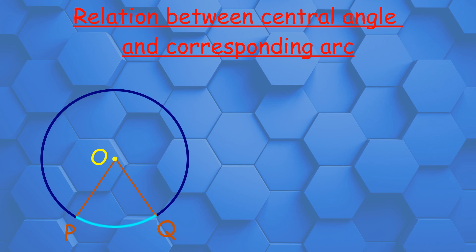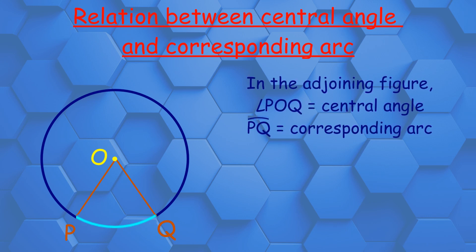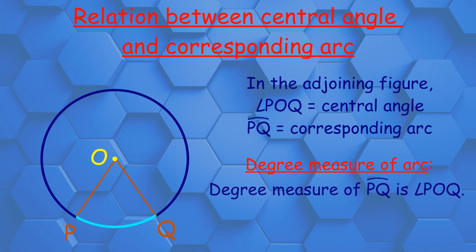That is, we can say in the adjoining figure, angle POQ is equal to the central angle, and arc PQ is the corresponding arc. The degree measure of arc PQ is equal to the angle POQ.